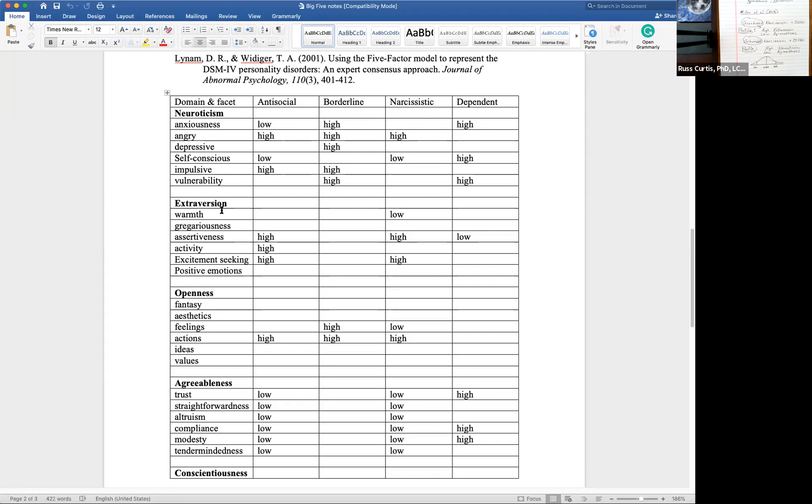But you're looking at extroversion, low warmth, high assertiveness, and high excitement seeking. I think this one's significant, the excitement seeking, because somebody may get a rush out of, you know, we talk about narcissism with infidelity a lot, may get a rush out of planning the secrecy and being in lying about it and conning people and doing so forth. So that kind of makes sense.